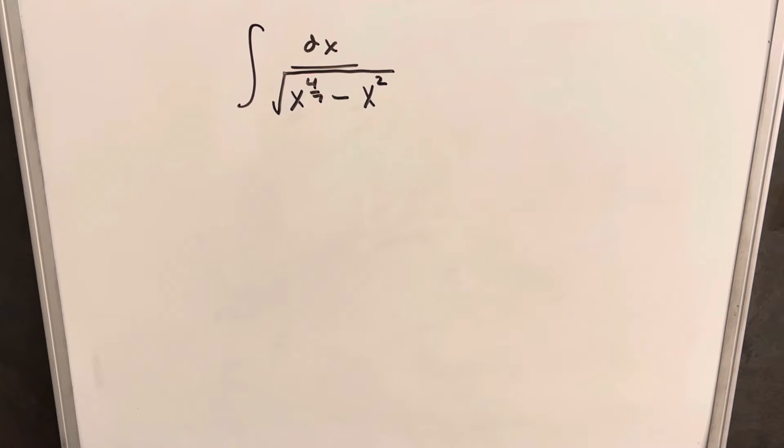Okay, we have here the integral of dx over the square root of x to the four sevenths minus x squared.